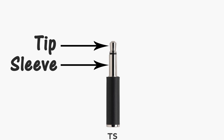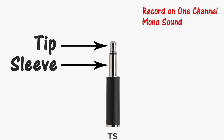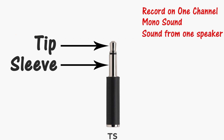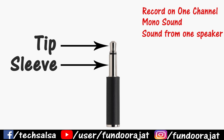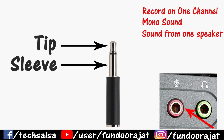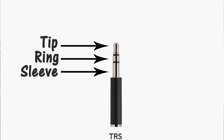TS stands for Tip and Sleeve. TS microphone cables record only on one channel, therefore the sound is actually mono, and the output is played from only one speaker, which is mostly the left speaker. You can use these microphone cables when you want to record on your camera, audio recorder, or any device that has a standalone microphone port.